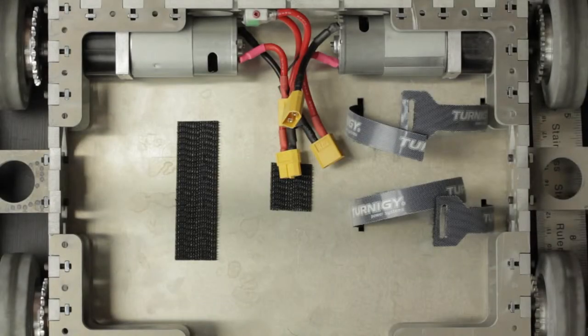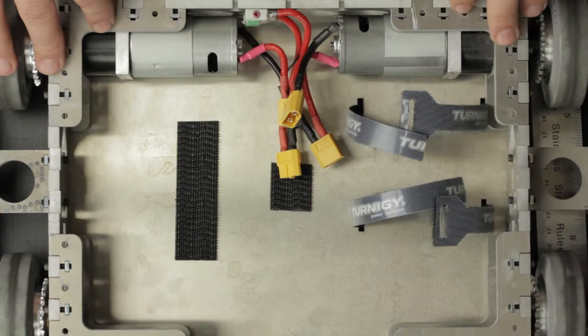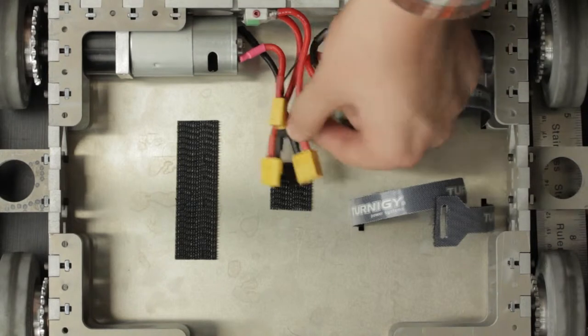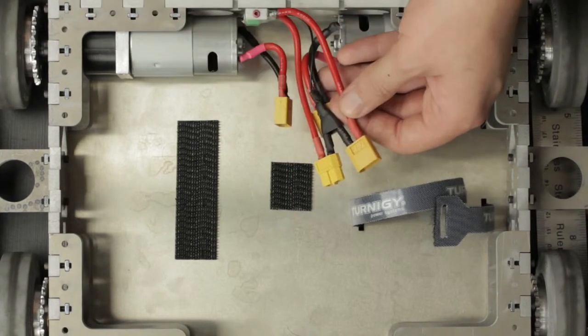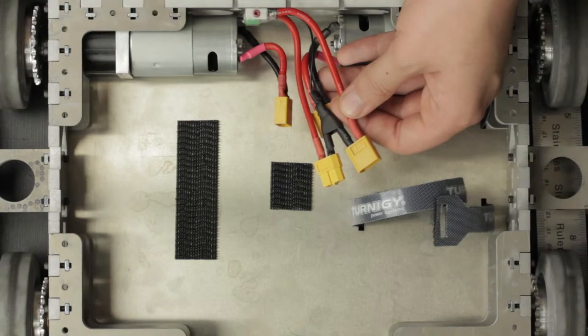Alright, so welcome to the electronic connection portion of the robot Revo kit instructions. We already have the motors of course mounted and they have their connectors as well as we have the switch mounted. The main power switch with its two connectors. These are known as XT60 connectors, a very popular connector in the RC markets today.